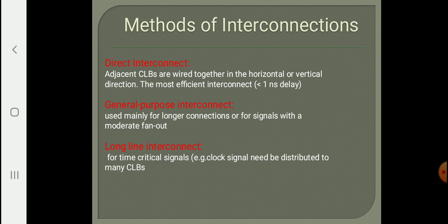To summarize the interconnects: a direct interconnect connects neighboring CLBs; a general purpose interconnect connects CLBs with lesser fanout or located anywhere using a switching matrix; and the long line interconnect is mainly used for distributing clock signals and power signals so that every CLB can be connected to the same input.